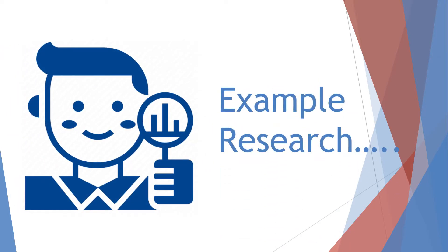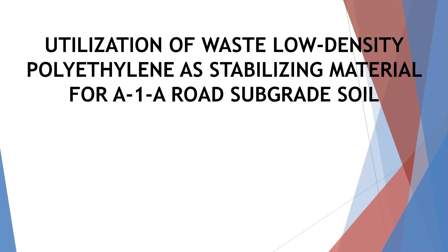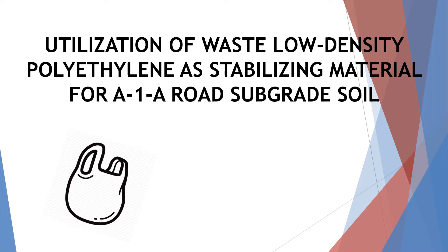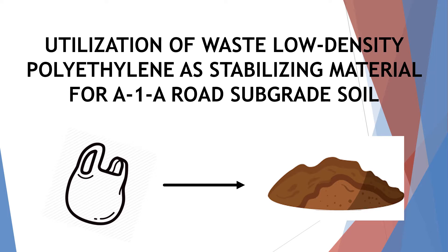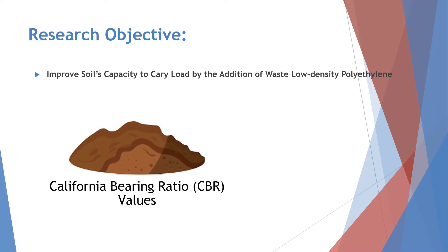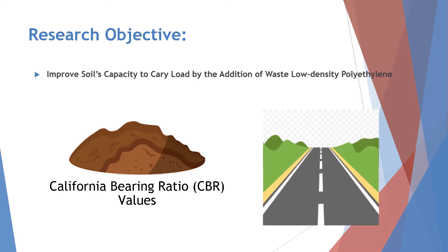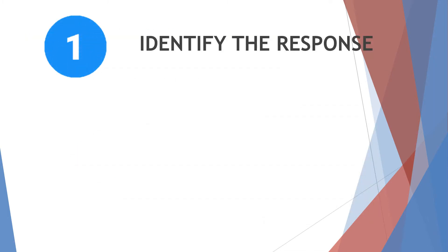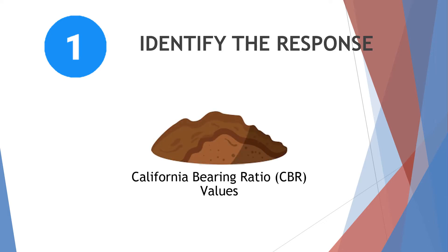Let us examine a more complex study which uses OFAT as the main experimental design. The study is entitled 'Utilization of Waste Low Density Polyethylene as a Stabilizing Material for A-1-A Road Subgrade Soil.' The research objective is to improve soil's capacity to carry load by the addition of waste low density polyethylene, and the soil is considered stabilized when its CBR is improved. We identify the response as the CBR, or California Bearing Ratio value.